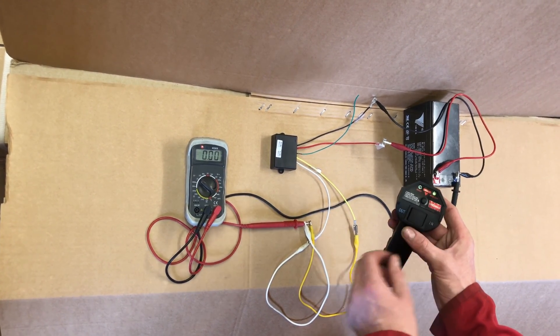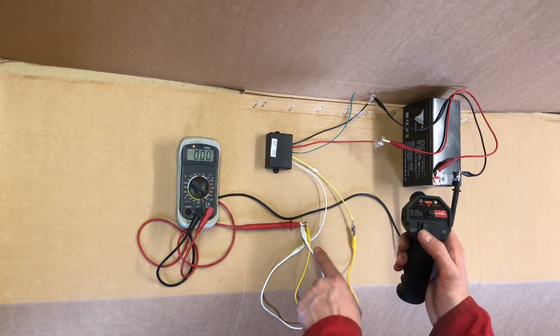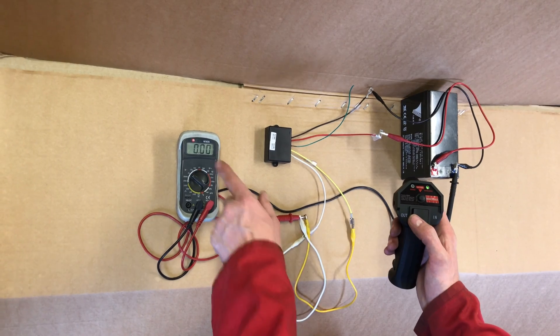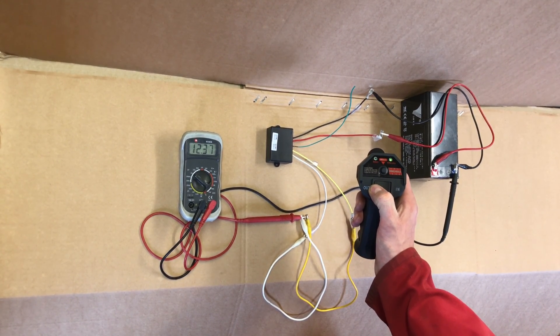Now when I press the out, that will energize the white wire which should give us 12 volts on there. You can hear a small click on the receiver and you'll see that the voltage has gone up to the battery voltage.